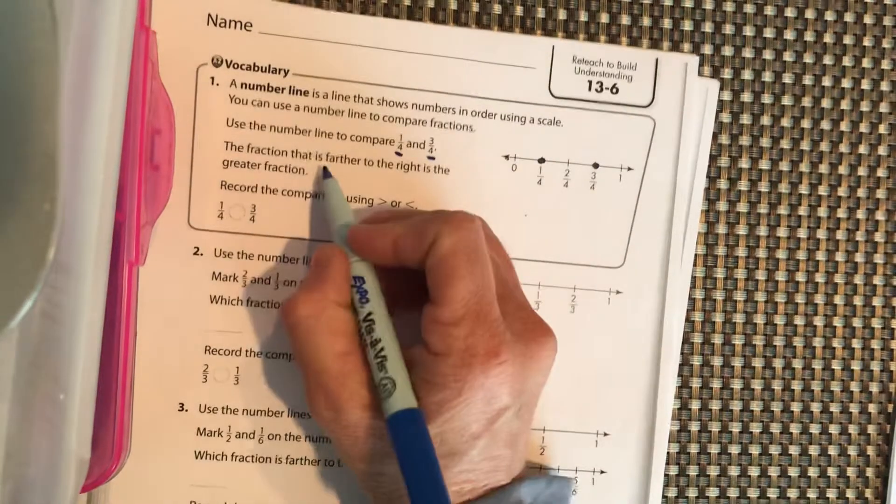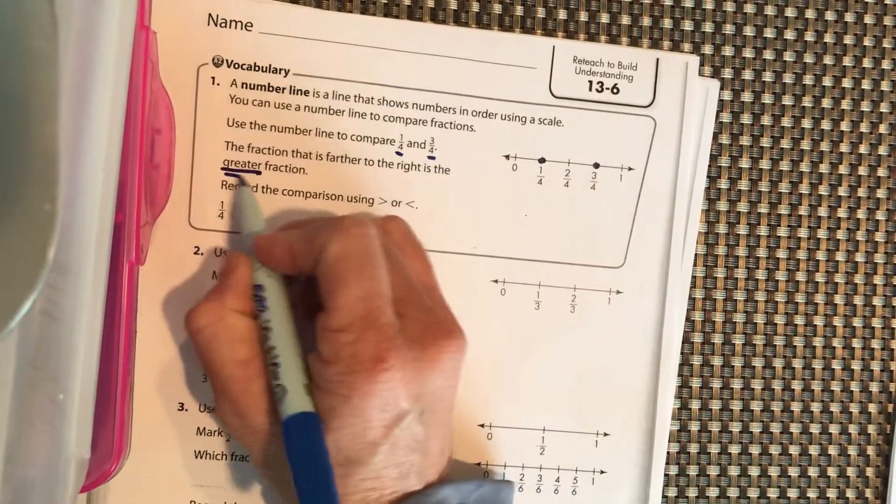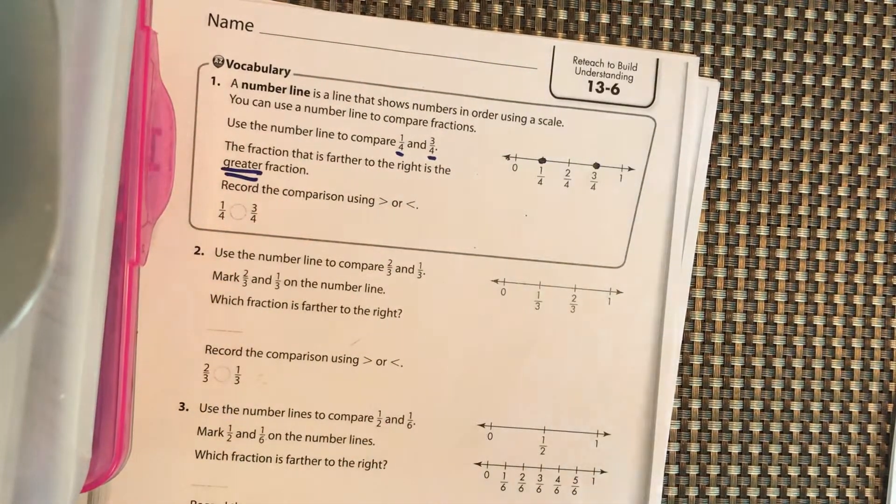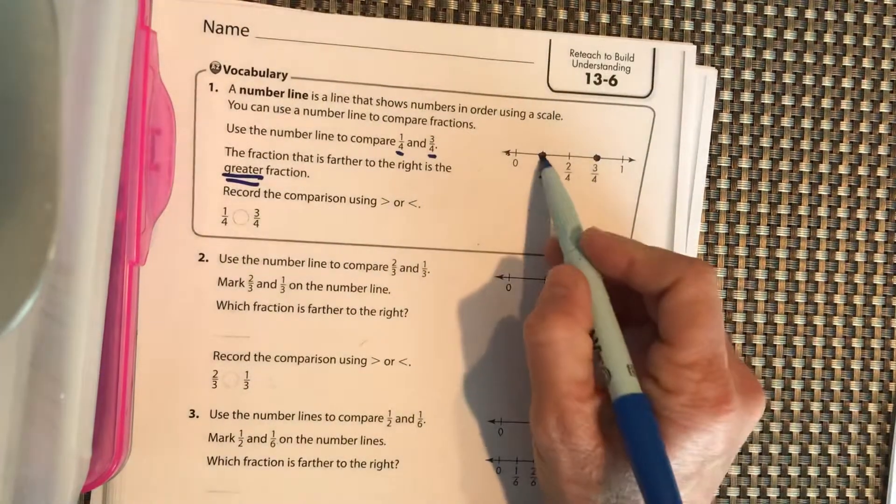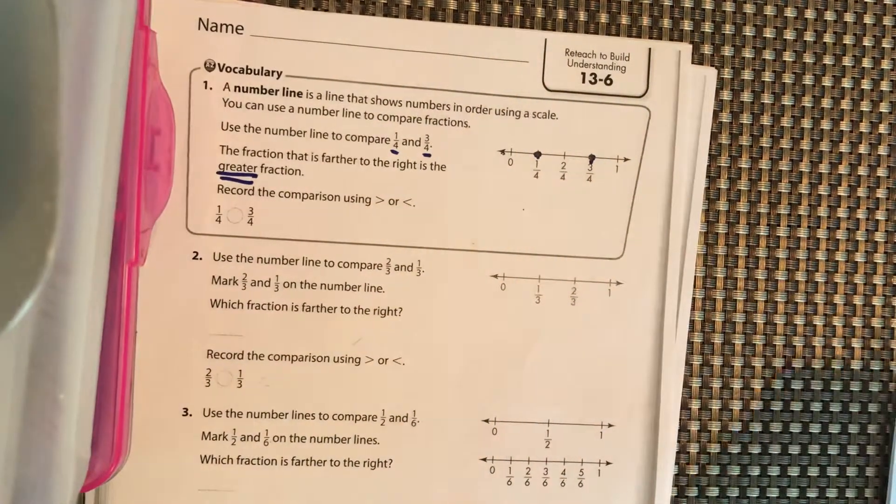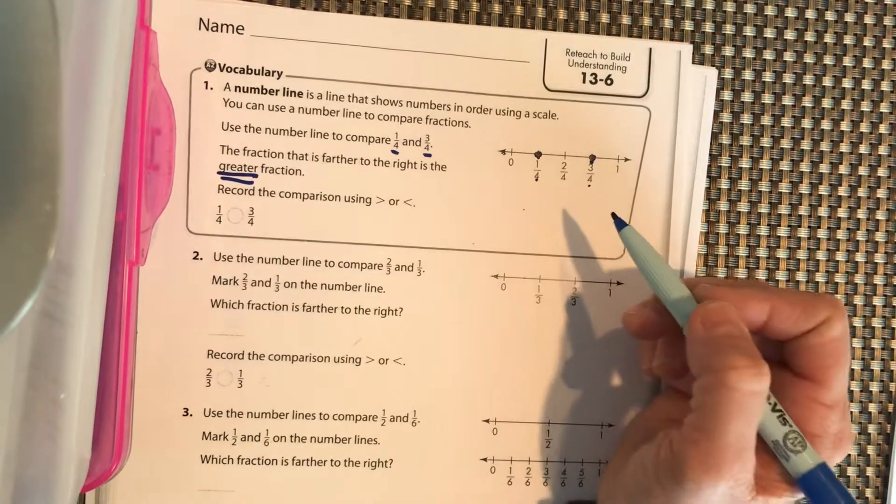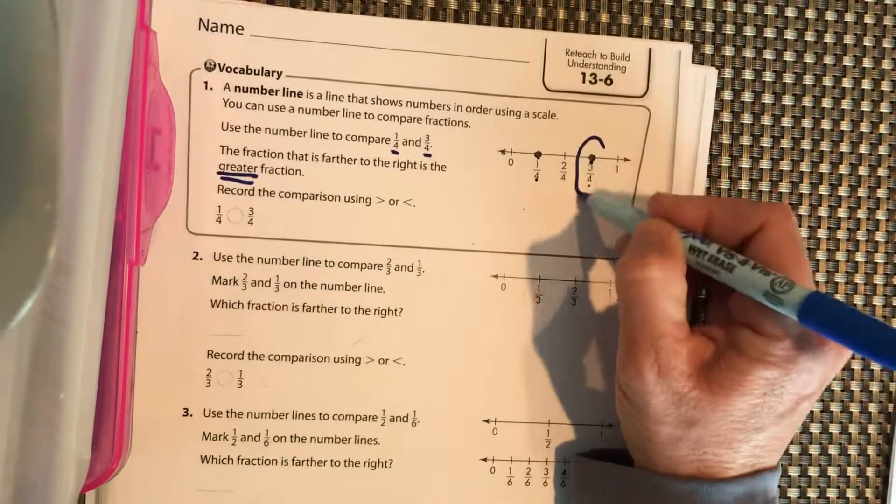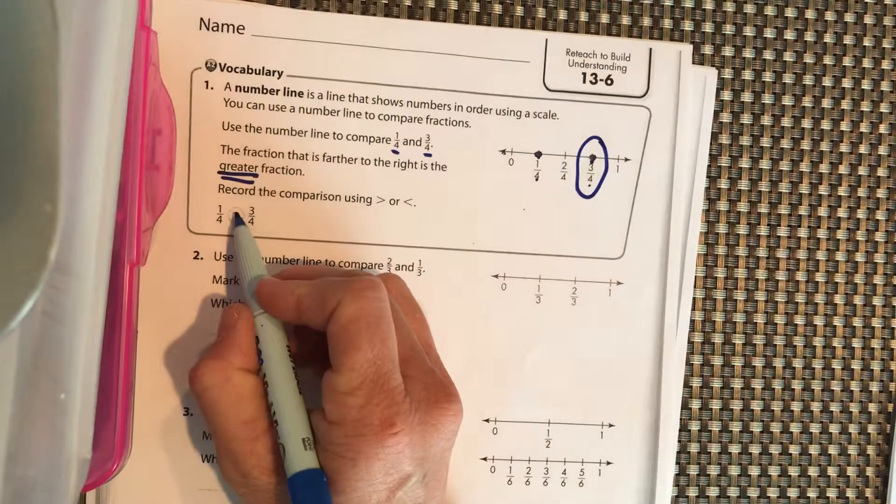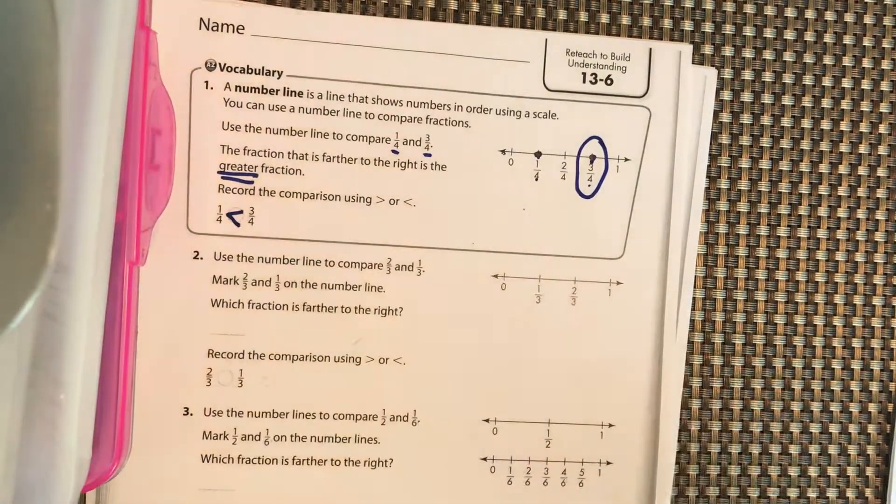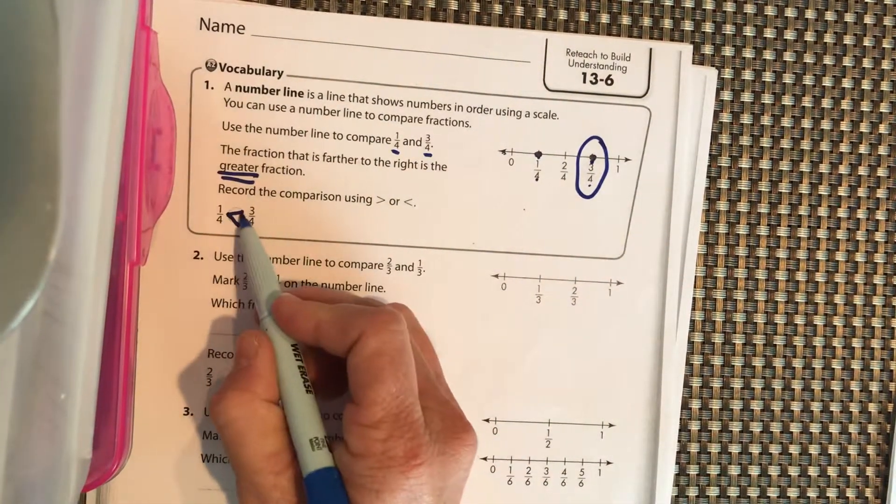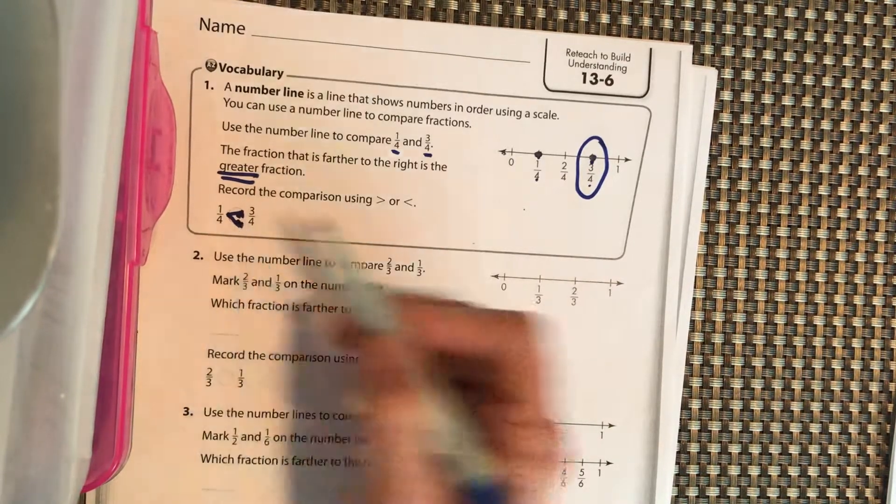When they're saying the fraction is farthest to the right, they're asking for the greatest fraction, the largest one. So 1/4 compared to 3/4, which one is larger? Well, if you had one apple compared to three apples, who has more? The three, right. So 1/4 is less than 3/4, pointing to the small number and our alligator eating our bigger number.